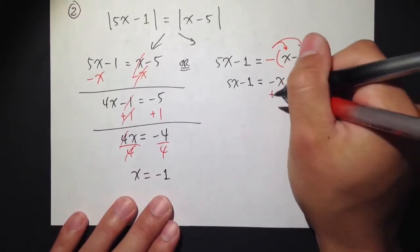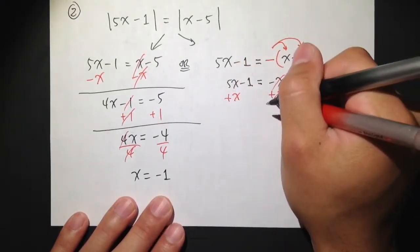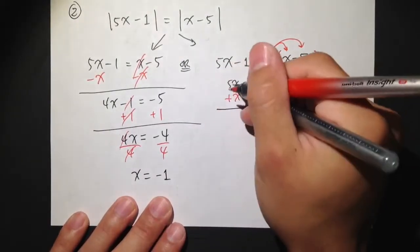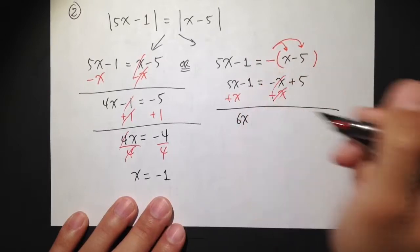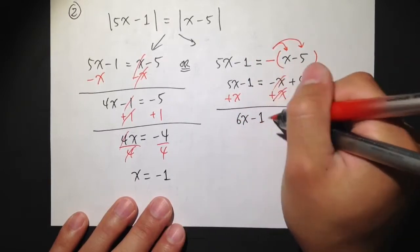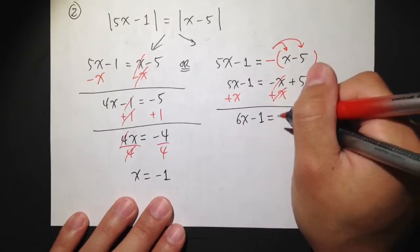Then, let's add x on both sides, cancel this x. 5x plus x, we get 6x, and then minus 1 is equal to positive 5.